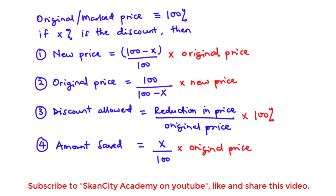Discount is the practice in some trade to sell goods at a price less than the original price, especially to regular customers and others who buy goods in large quantities. Such a reduction in the original or marked price is called the discount, and is usually given as a percentage of the marked price or original price of the article.